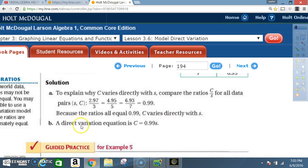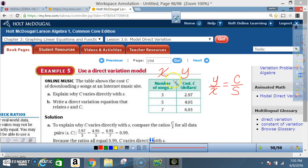B. A direct variation equation then is C equals 0.99 times S. Now, for those of us who may be a little bit confused as to what's going on, see how they got 2.97 divided by 3? 4.95 divided by 5. And 6.93 divided by 7.